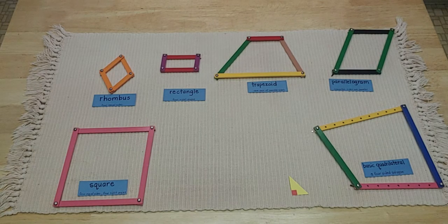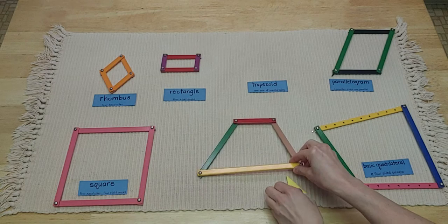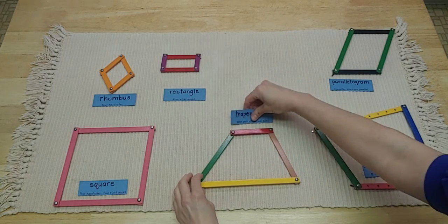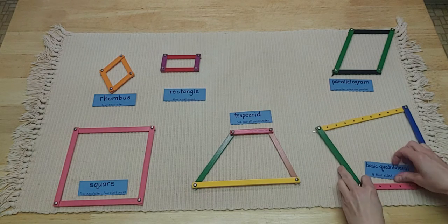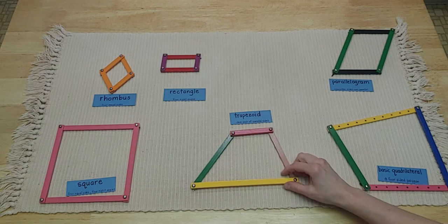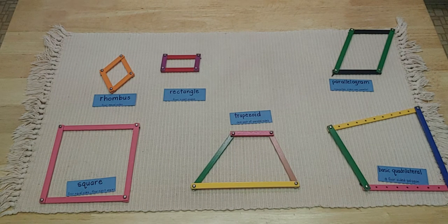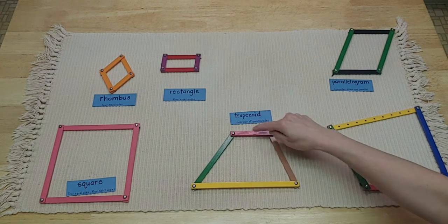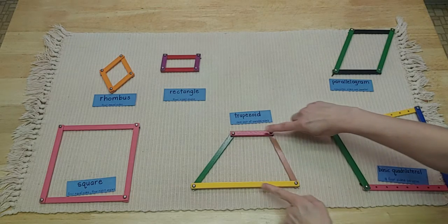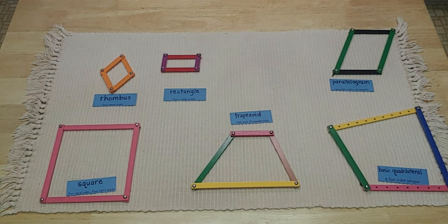Another quadrilateral that you might be curious about is this trapezoid. Isn't that such a cool name for a shape? Trapezoid. The trapezoid is really special because it has one pair of parallel sides. Now you'll notice I have all different colored sticks, but two of these sticks are parallel. And if you're not really sure what parallel means, because it's been a while,